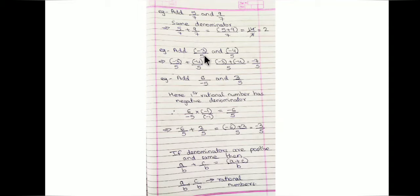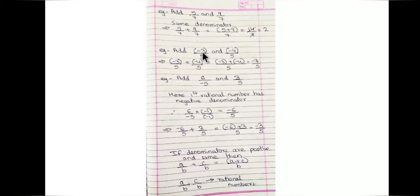Next, add minus 3/5 and minus 4/5. Here the numerators are negative — we are considering negative rational numbers for addition. Note that the numerator can be negative, but the denominator is not supposed to be negative when performing operations like addition or subtraction.